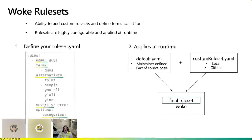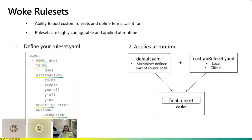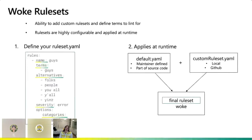Woke rule sets also have a key for severity. This becomes important when you are incorporating CI/CD processes. Setting a severity of error can fail your PR if you wish, and there are multiple different levels of severity, similar to logging severity. My team built out the options category, which allows you to plug and play different categories. For example, 'guys' falls under gendered language. At the top of your rule set, you can plug and play different categories to include or exclude them as you wish.